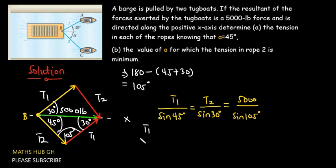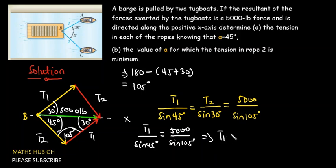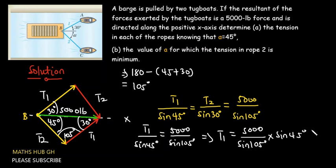To find T1, you have T1 divided by sine of 45 degrees equal to 5000 divided by sine of 105 degrees. Solving for T1: T1 equals 5000 divided by sine of 105 degrees, multiplied by sine of 45 degrees. This gives us a value of 3660.25 pounds. So that is the value of T1.